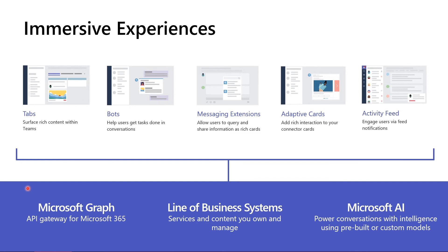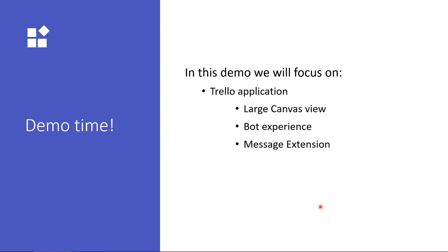So application scope: Teams and channels where they can appear, chat, or a user-centric personal application. All these immersive experiences — tabs, bots, message extensions, adaptive cards, and activity feeds — are built on the Microsoft backend platform: Microsoft Graph, which is our identity layer, and you may integrate with your line of business applications. You can also build applications on Microsoft AI: conversations with intelligence, pre-built and custom models. This reminds me of demo time. I'm going to show you an application called Trello in a large canvas view, a bot experience, and a message extension.